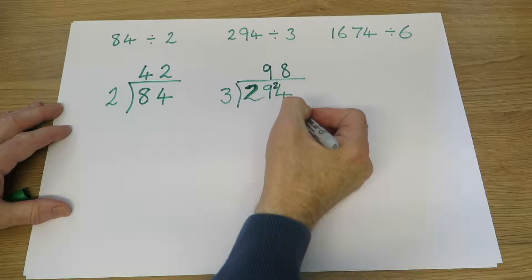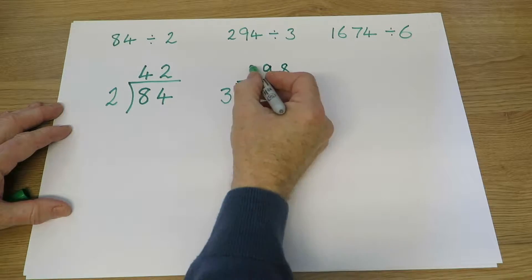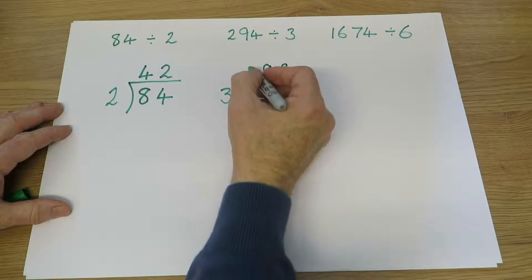And notice how the tens are in line and the units are in line, which is why there's nothing there in that space, because there wasn't a number to go there.